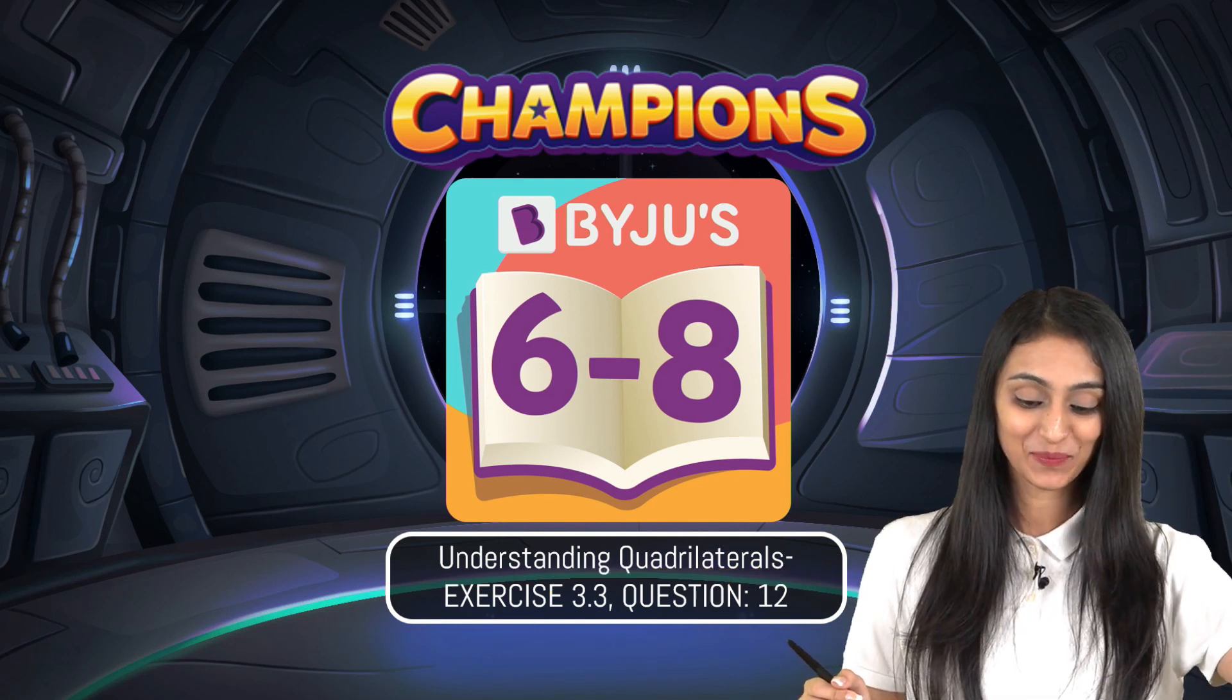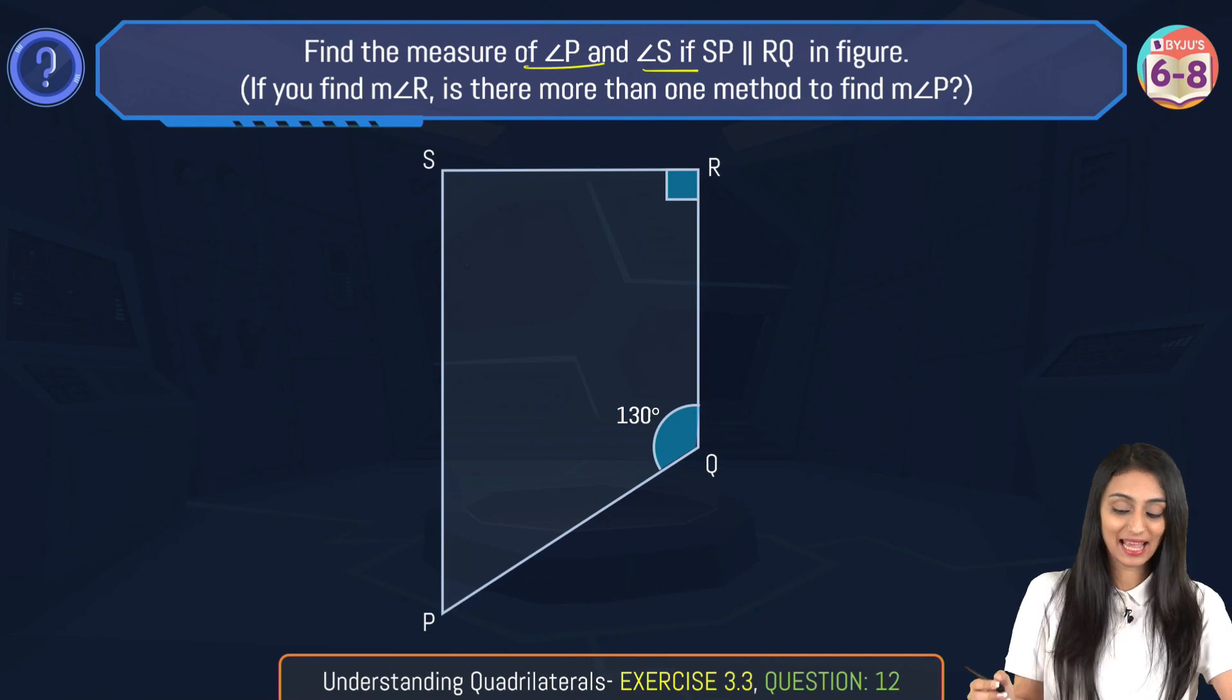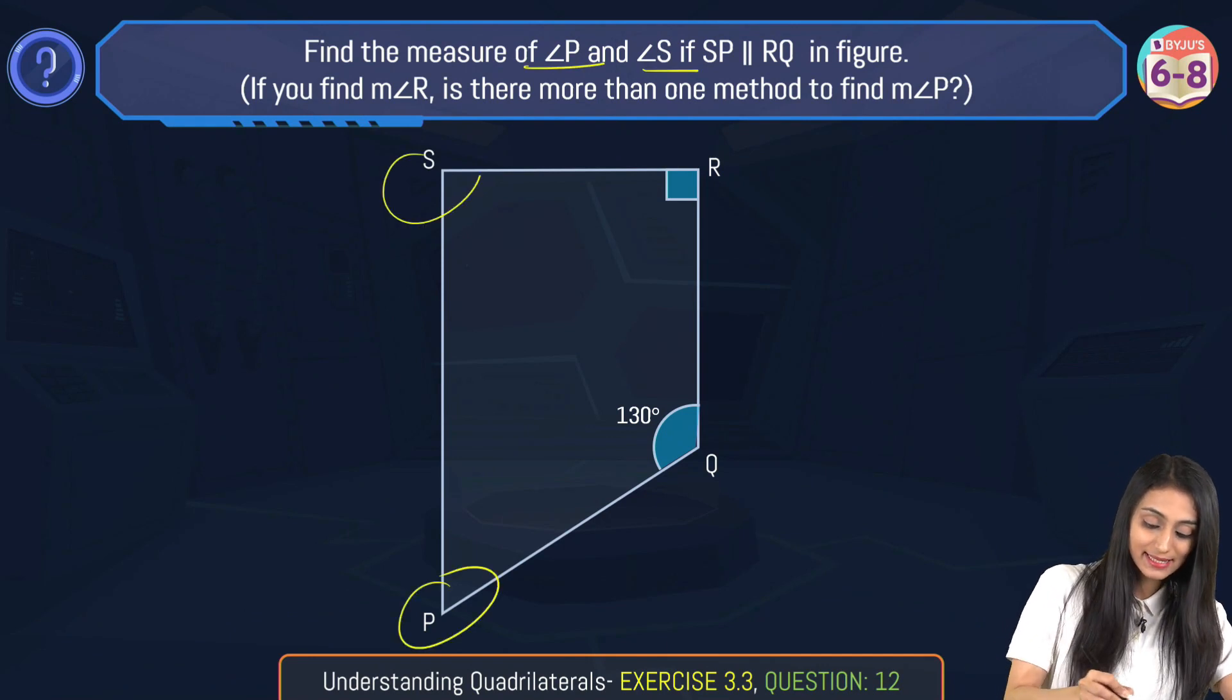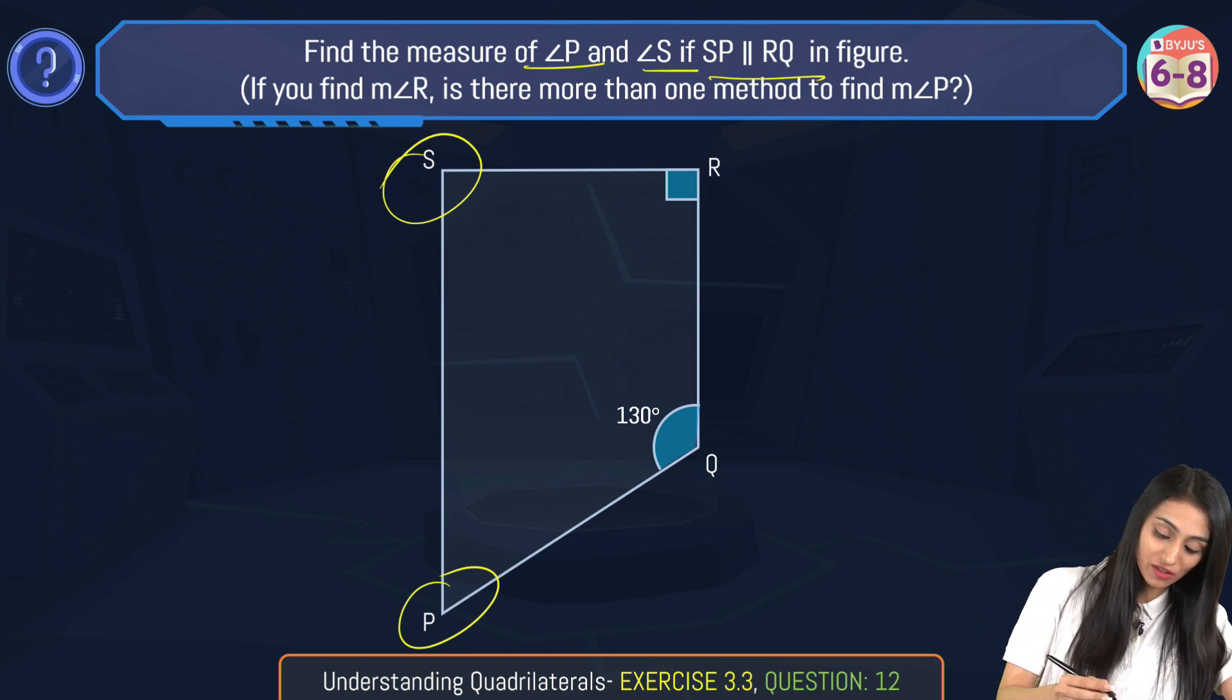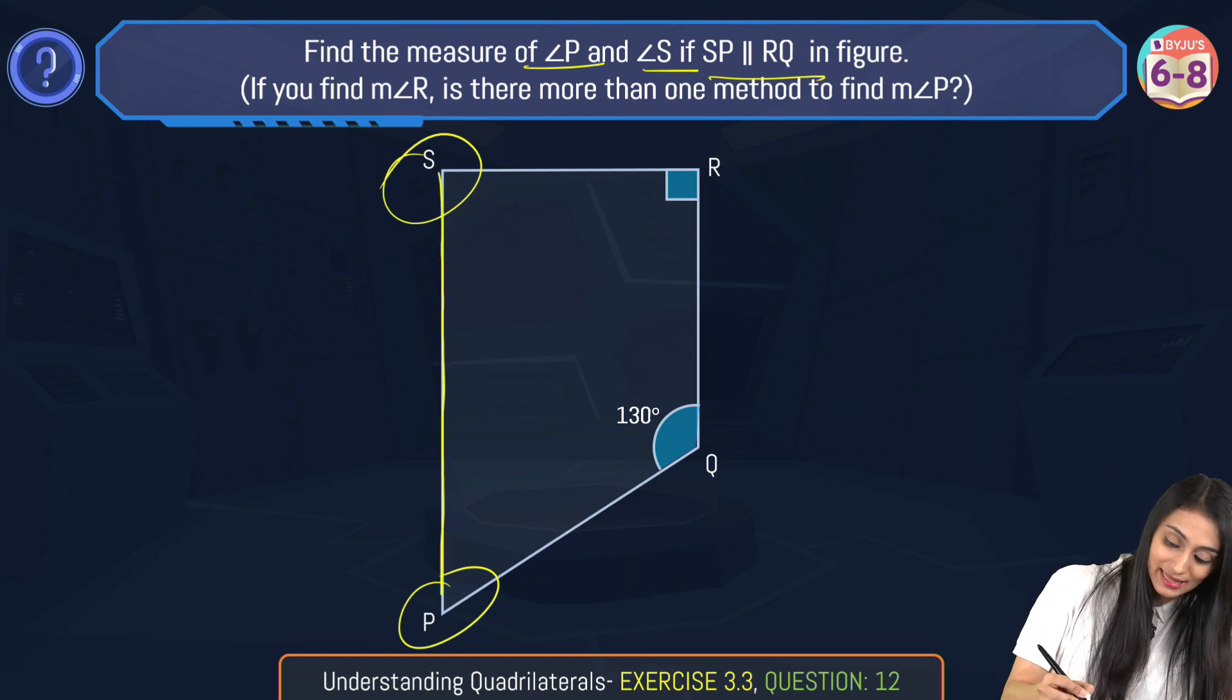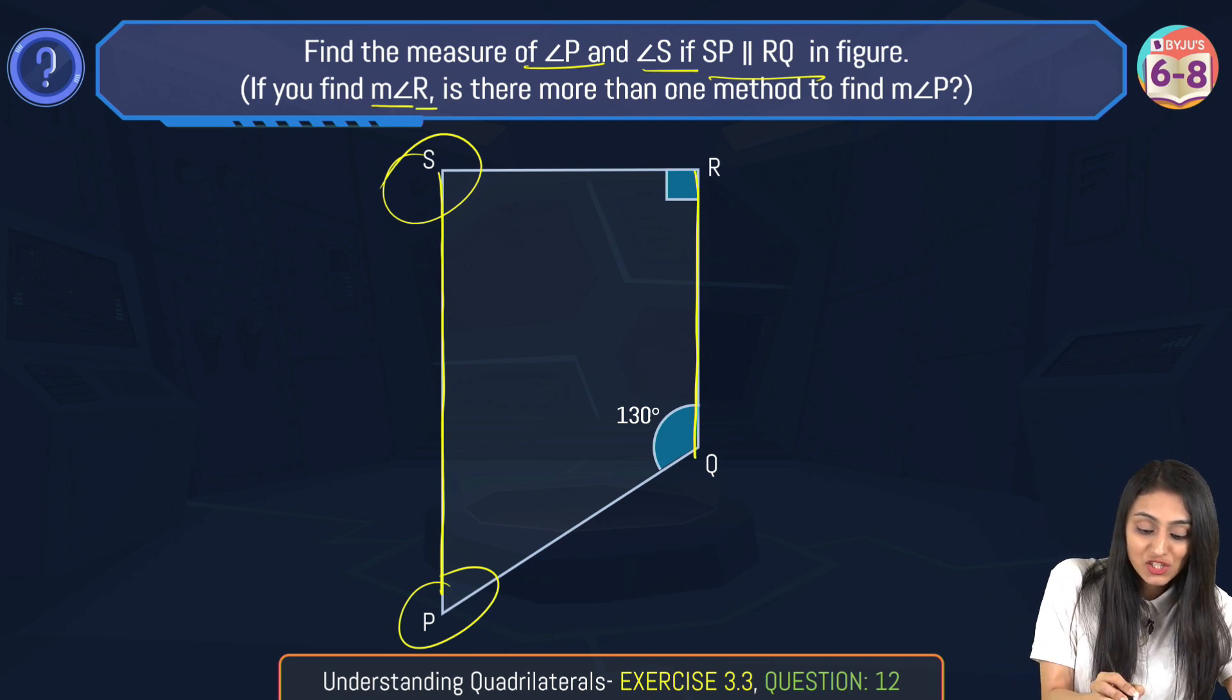So let's take a look. The question is: find the measure of angle P and angle S. This is angle P and this is angle S. We have to find out their measures if SP is parallel to RQ in the figure. This is SP and this is RQ.